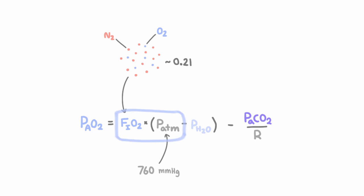And FiO2 times P atm would then be the partial pressure of oxygen in the gas right before we breathe it in.